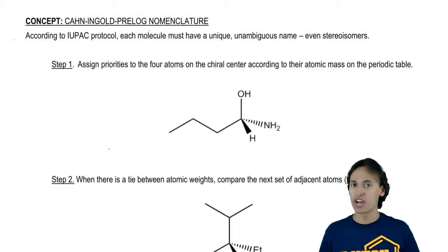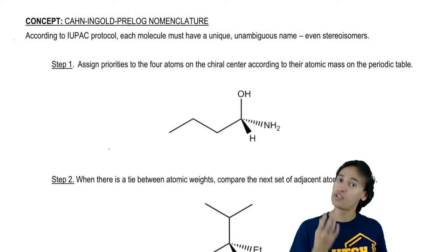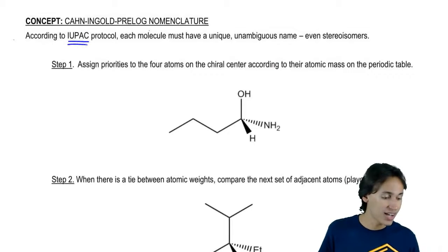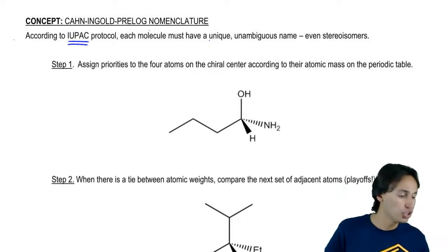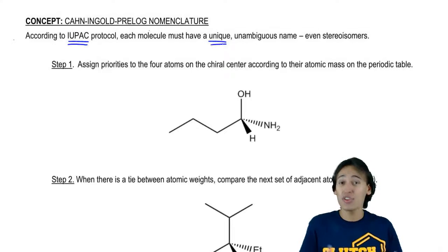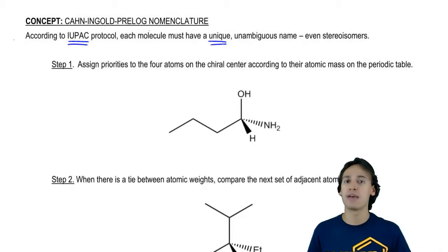If you remember back to when I first taught you guys about simple alkane nomenclature, we talked about the IUPAC naming system. According to IUPAC protocol, every single molecule in the universe needs to get its own unique name. That's the point of IUPAC—that now we have a systematic way to name every single molecule.